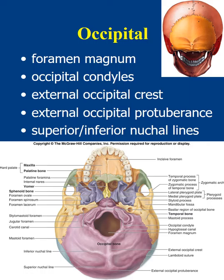The occipital bone forms the posterior region of the skull and the base of the cranium. The foramen magnum is the large circular opening where the medulla oblongata of the brain connects to the spinal cord — the separation point between brain and spinal cord. Lateral to the foramen magnum are the occipital condyles, which are smooth knobs that articulate with the first cervical vertebrae. When you nod your head yes, you are moving the occipital condyles against the first cervical vertebrae.